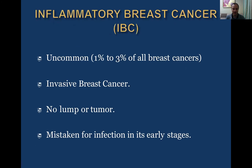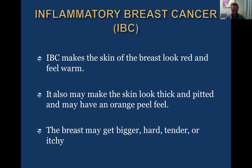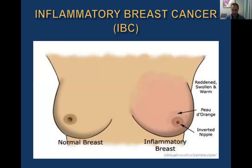Regarding inflammatory breast cancer — it's very uncommon, less than one percent. This is invasive breast cancer with no lump or tumor; it's a diffuse tumor from the beginning. It looks like inflammation of the breast. That's why inflammatory breast cancer makes the skin look red and feel warm — all signs of inflammation. It may also make the skin look thick, and the breast may get bigger, hot, tender, or itchy. This view of inflammatory breast cancer looks like mastitis of the breast — it simulates mastitis and may be mistaken for it.